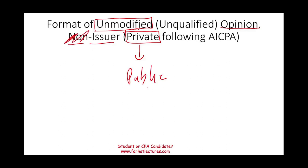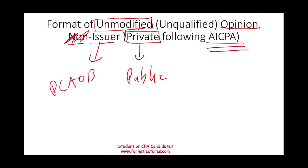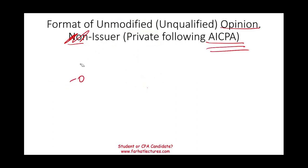An issuer is a company that issues stocks to the public, like PepsiCo, Coca-Cola, Microsoft, or Apple — usually large companies. Private companies could be large or small. Private companies follow the AICPA, while issuers follow the PCAOB. We have a separate recording about the unqualified issuer opinion, but for this session, we're going over a report for a non-issuer with an unmodified opinion.